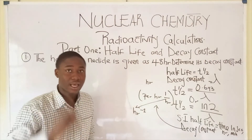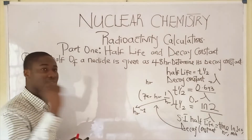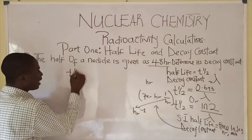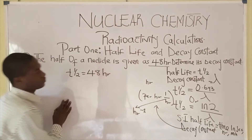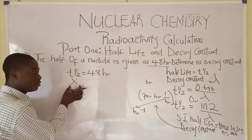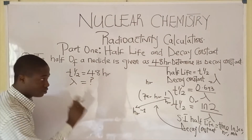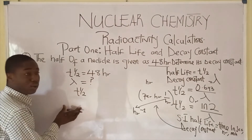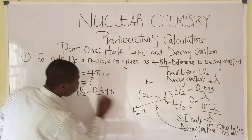Let's quickly look at this first question. The question says the half-life of a nuclide is given as 48 hours. That means the half-life, given with the symbol T-half, is 48 hours. Determine its decay constant, which is given as lambda. We already know a formula that relates half-life and decay constant. It is simply T-half, which is T1/2, is equal to 0.693 over lambda.